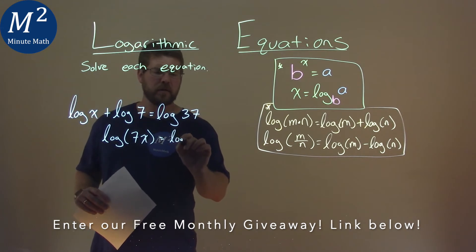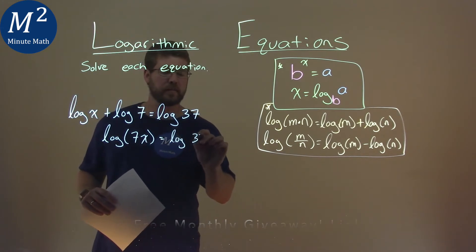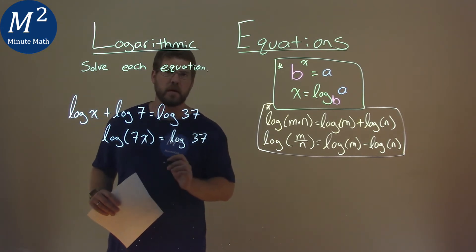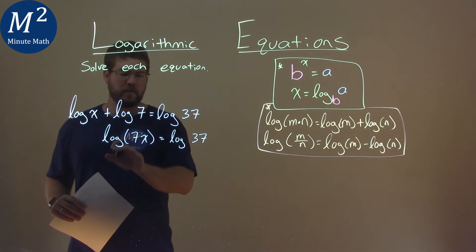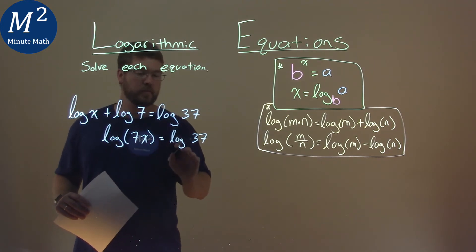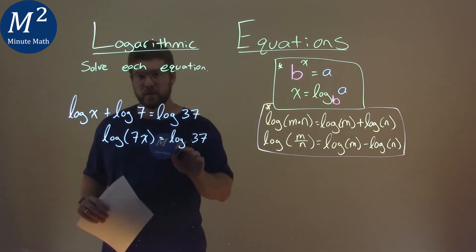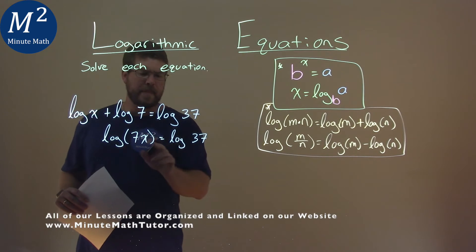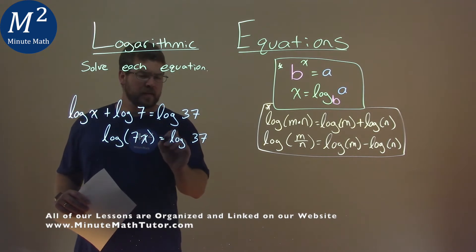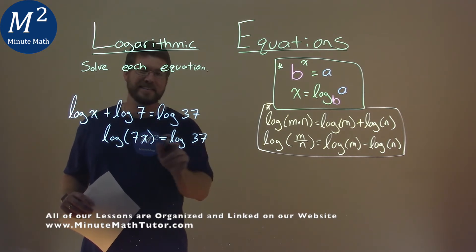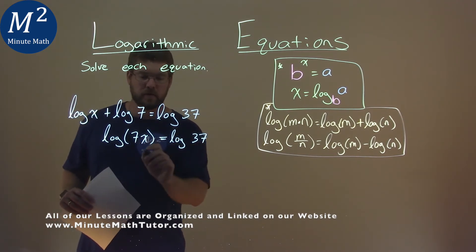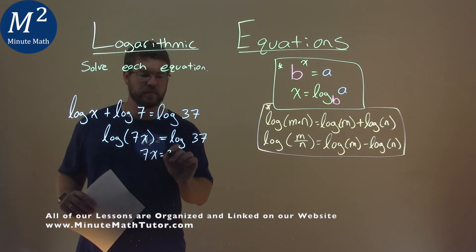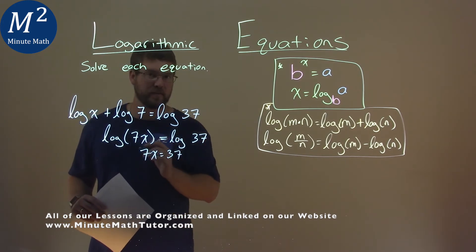That's equal to log of 37. Our other rule states that if we have a log with the same base equal to a log with the same base, and that's the only thing there, we can just set the inner sides equal to each other. So we can set 7x equal to 37 and then solve for x.